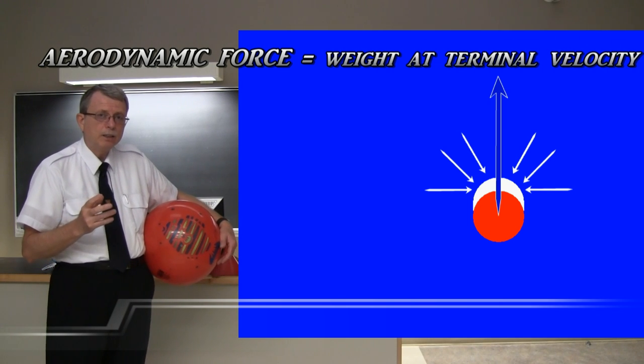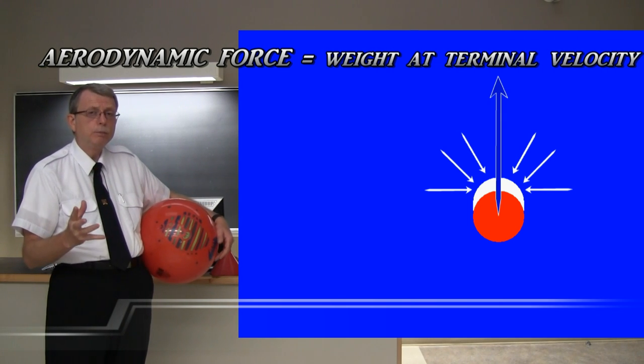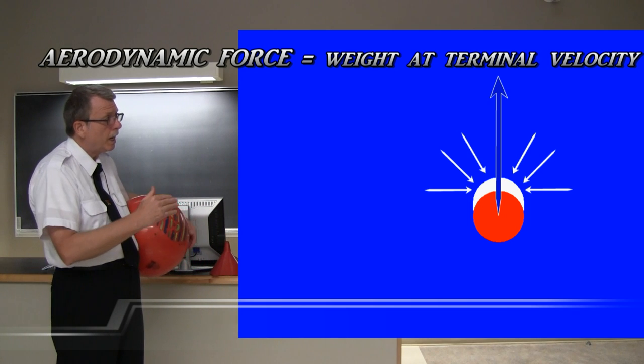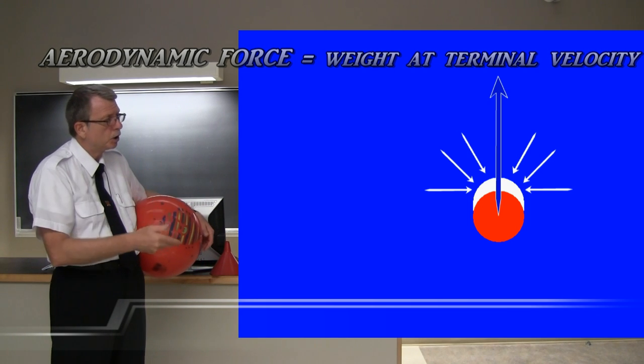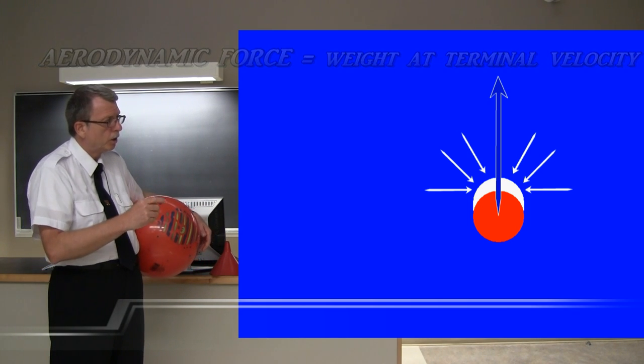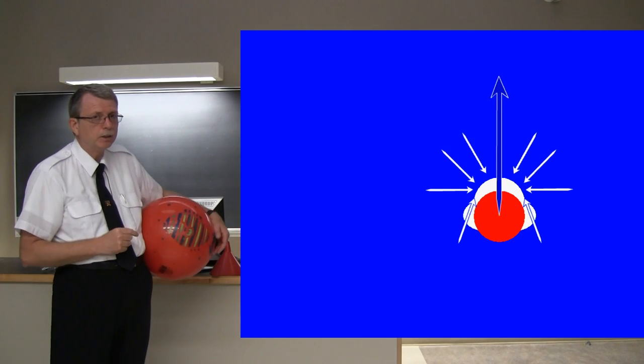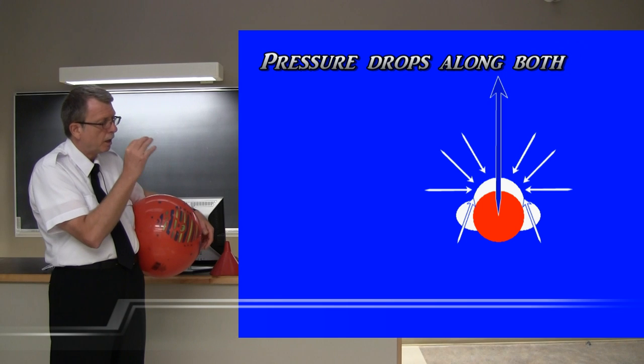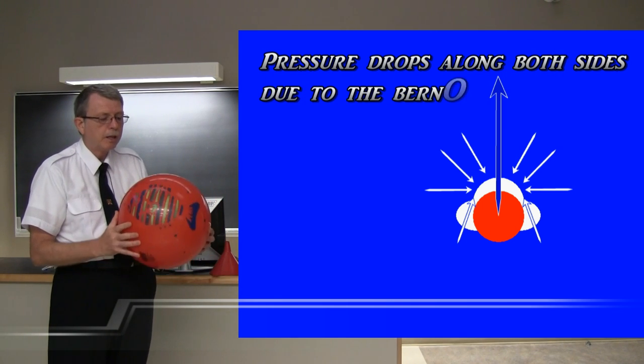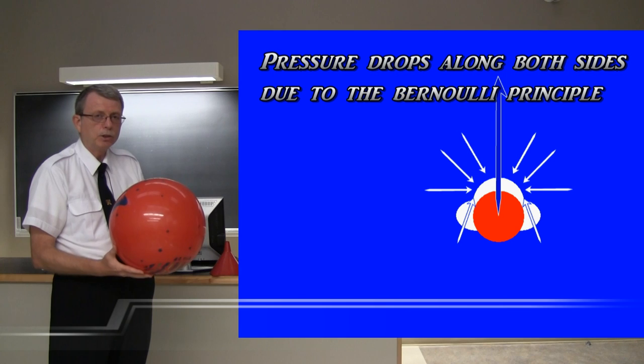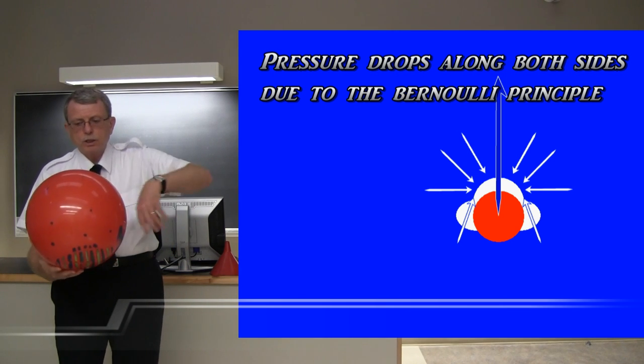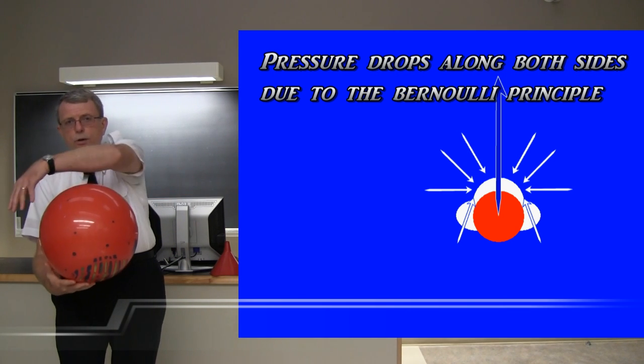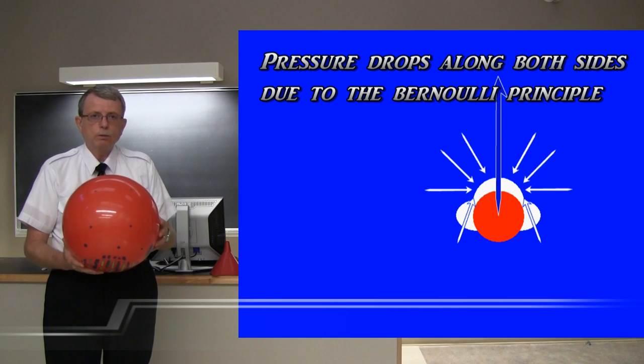But now that we understand this Venturi effect, the Bernoulli principle, we realize that the curved shape of the sides of the ball is going to cause the air to rush around the sides of the ball and there's also going to be low pressure around the center of that ball. Now, the diagram is two-dimensional, but in the real ball, this is just going to be like a donut of low pressure right around the waist of the ball.